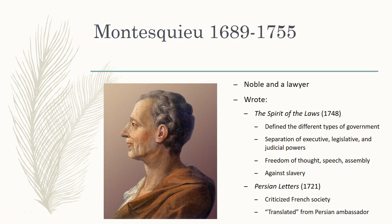We're talking about people like Montesquieu — Charles Louis de Secondat, the Baron de Montesquieu. He was a noble and a lawyer on top of being a philosopher. He wrote quite a few important works, and we're going to be concerned mainly with two of them. The first is called The Spirit of the Laws, written in 1748. In it, he stated that there were three major types of government that man created: the Republic, the Monarchy, and Despotism.